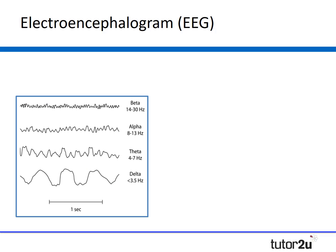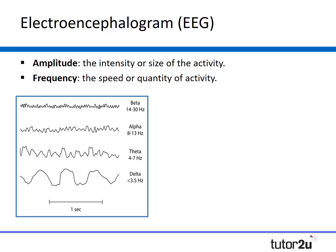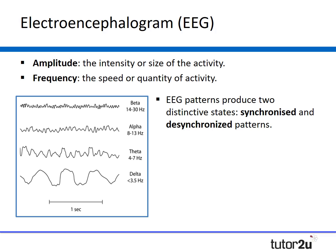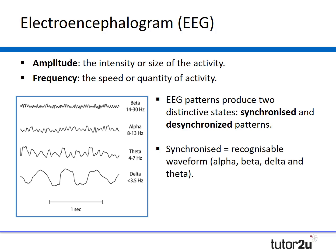Each of those four patterns has two basic properties: amplitude, which is the intensity or size of the activity — the delta wave has the largest amplitude — and frequency, which is the speed or quantity of the activity; beta and alpha waves have the higher frequencies. EEG patterns also produce two distinctive states: synchronized and desynchronized. A synchronized pattern is a recognizable waveform such as alpha, beta, delta, or theta, whereas a desynchronized pattern has no recognizable waveform — usually because there is a mixture of all four.